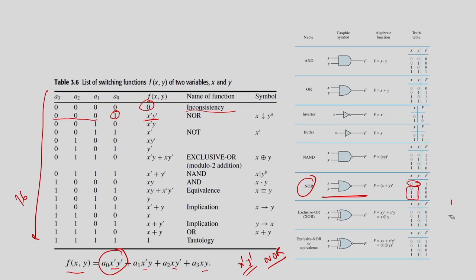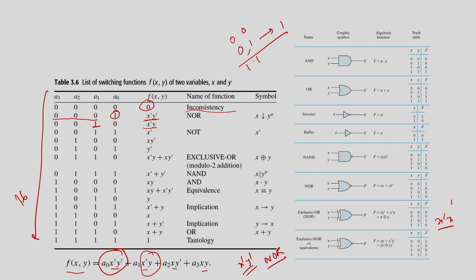When a1=1 (and others 0), the function is x bar·y — a valid but less common gate with no standard name. The important gates used in digital design are: NOR, NAND, OR, AND, XOR, and XNOR. When a1=1 and a2=1, the function simplifies to x bar·y + x·y bar, which is the XOR (Exclusive OR) gate. XOR outputs 1 when inputs differ (0,1 or 1,0) and 0 when both are the same.